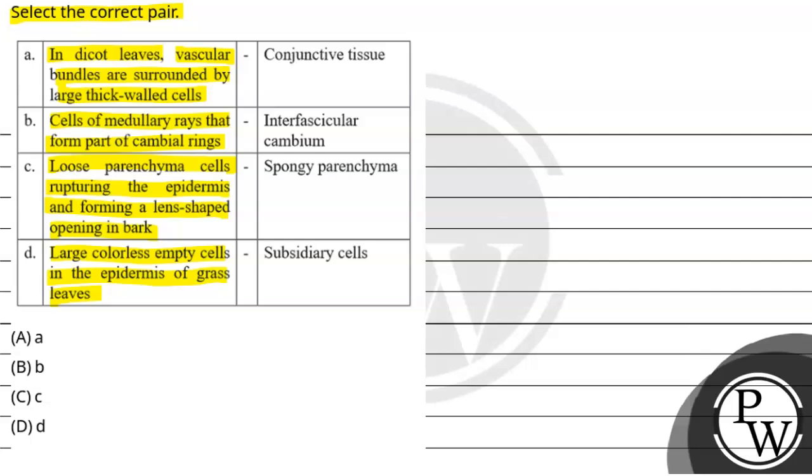Column B: conjunctive tissue, interfascicular cambium, spongy parenchyma, subsidiary cells. So option A is A, option B is B, option C is C, option D is D.